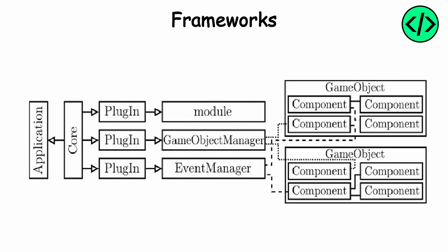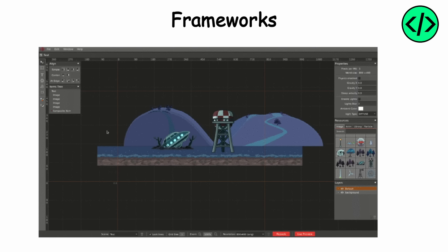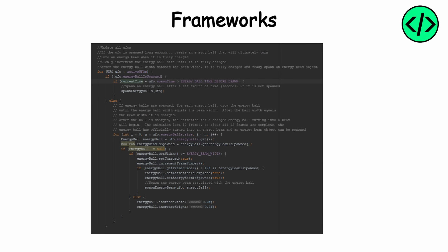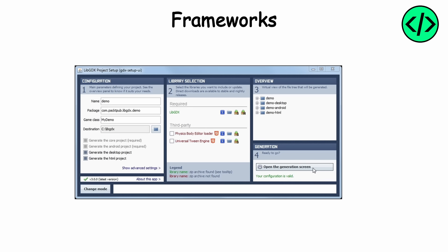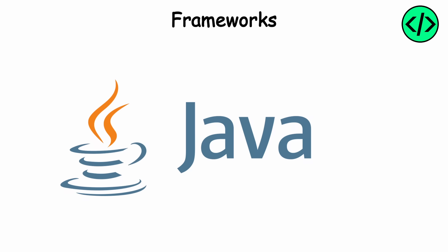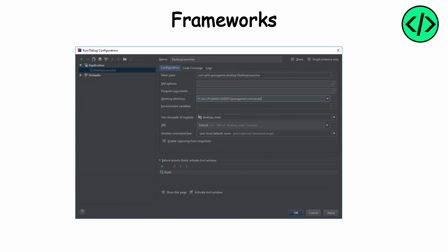Frameworks provide developers with a comprehensive set of tools and features for creating games, including graphics rendering, physics simulation, and audio management. Frameworks differ from traditional game engines in that they offer more flexibility but require developers to write way more code to implement specific functionalities. Some devs prefer frameworks for their versatility and ability to customize every aspect of the game. The most notable example is Minecraft, which was built using a Java-based framework. Frameworks provide a foundation of libraries and APIs that developers can use to build their games from scratch, giving them full control over the development process.